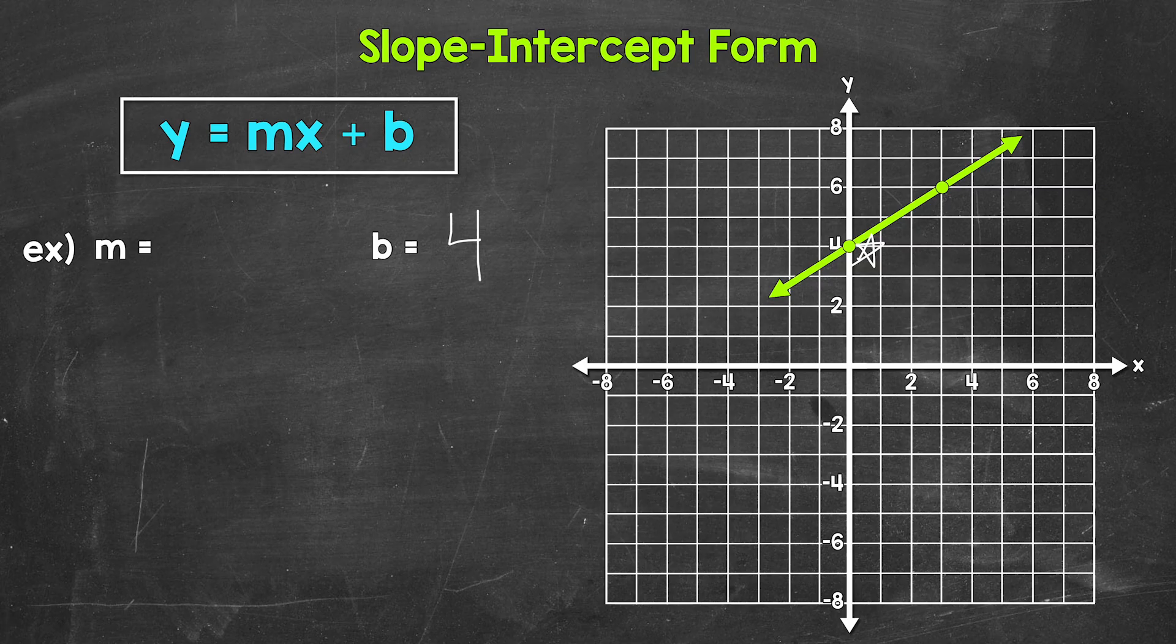Now we find our slope here by going from one point on the line to another point on the line. And we're going to work from left to right here. So we're going to start at that y-intercept and then work our way to that other point. Remember, slope equals rise over run.